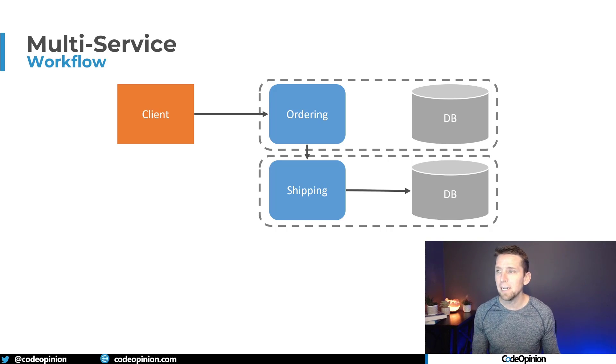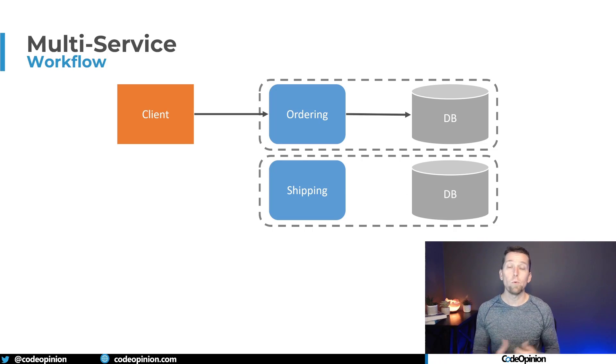Shipping saves that data, and then our ordering service can persist the rest of the order information in its database. Now there are issues with doing that synchronous request-response between ordering and shipping, but what I really want to focus on here is that that call actually didn't need to happen — because we're trying to pass information to another service when it really should have had that information in the first place.